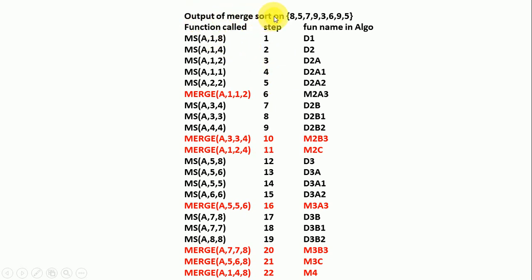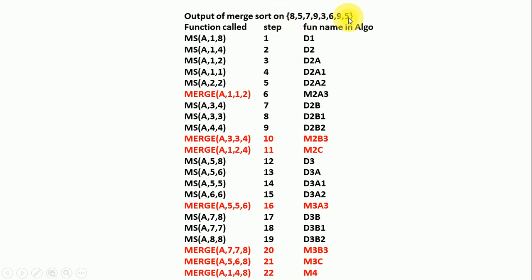This is the output of the merge sort program. We supplied input as 8, 5, 7, 9, 3, 6, 9, 5 and sorted these data items. A total of 22 times the merge sort and merge functions were called. The merge sort signature is: merge_sort(a, p, r) where 'a' is the array name, 'p' is the low index, and 'r' is the high index. So r equals 8 (8 elements) and p equals 1, so this is the first function call.